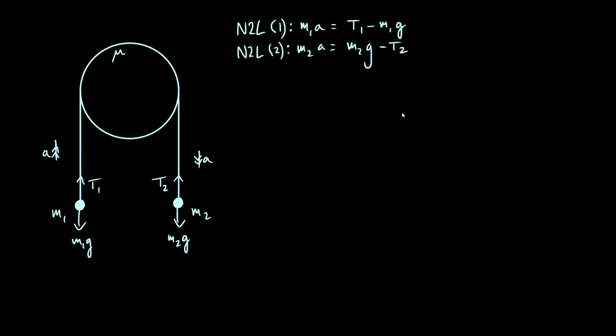So the difficulty here is that we've now got two equations, but we've got three unknowns, which are a, the acceleration, and t1 and t2, whereas previously we could eliminate the tension because they were the same. So what we need is a third piece of information about these tensions. Now, the first thing I want to do is just rearrange these two equations a bit.